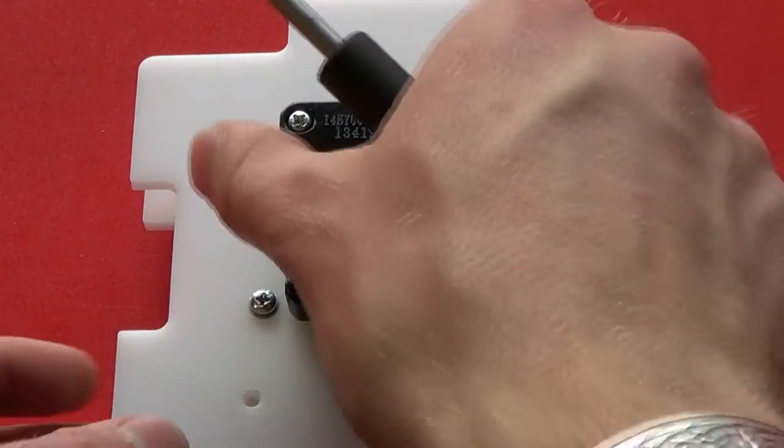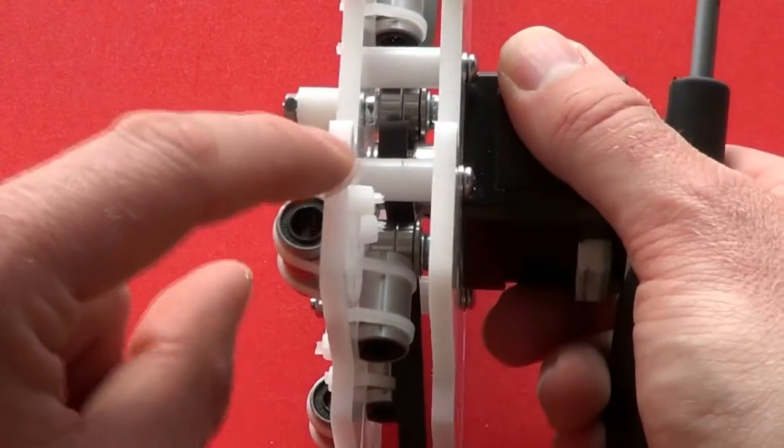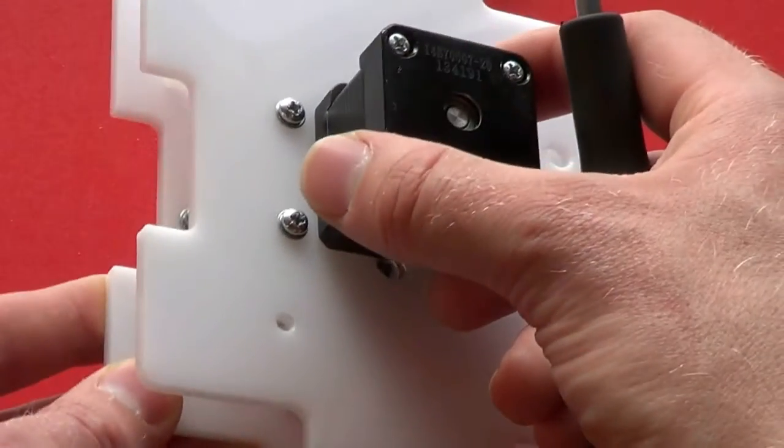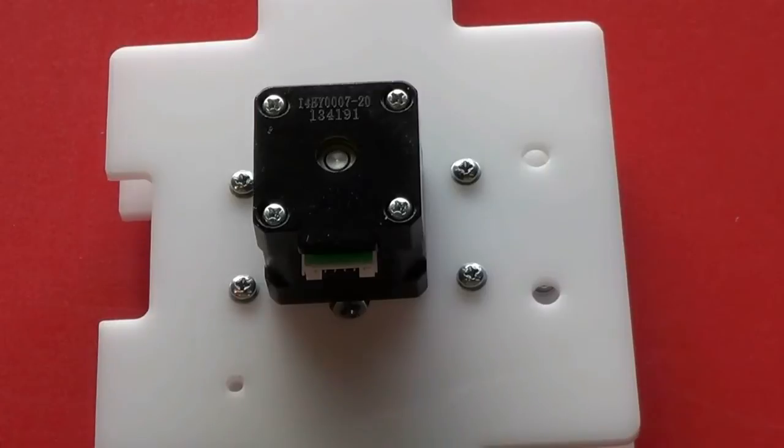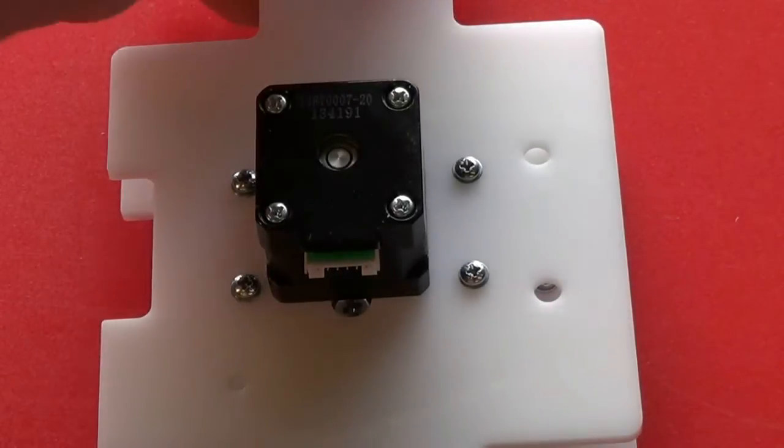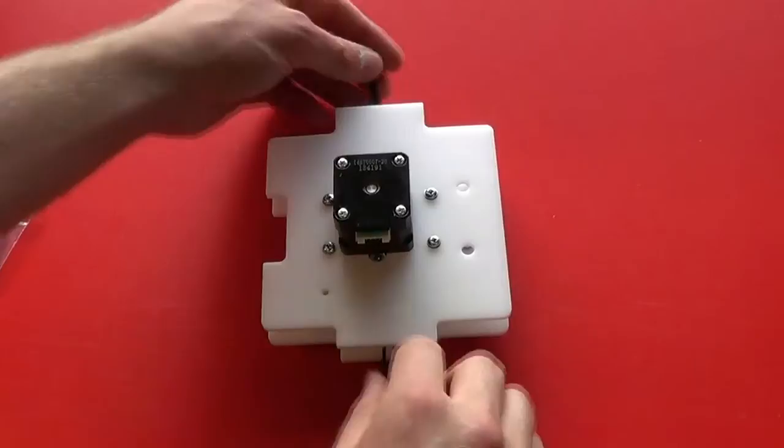Again, take care not to over-tighten because these are being threaded directly into the plastic of the lower carriage plate. Check that the Y belt is free to move.